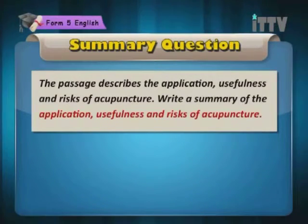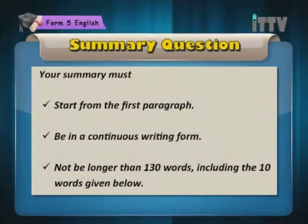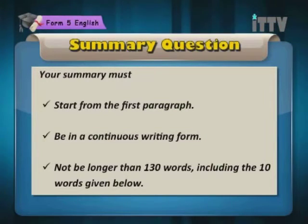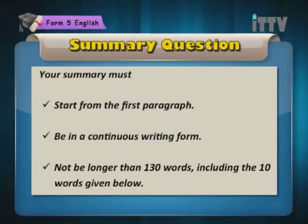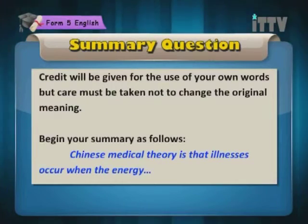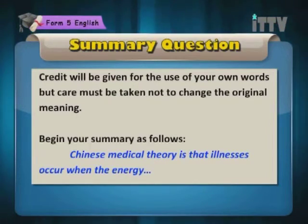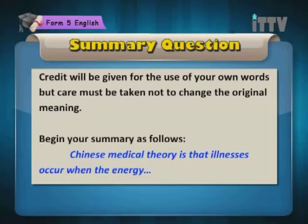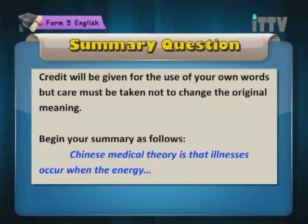Write a summary of the application, usefulness and risk of acupuncture. Your summary must start from the first paragraph, be in a continuous writing form, not be longer than 130 words, including the 10 words given below. Credit will be given for the use of your own words, but care must be taken not to change the original meaning. Begin your summary as follows: Chinese medical theory is that illnesses occur when the energy...